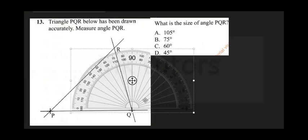So this is 70, 71, 72, 73, 74, 75. From here I'm getting 74, which is approximately 75. So the correct answer here is B. That takes us to question 14.